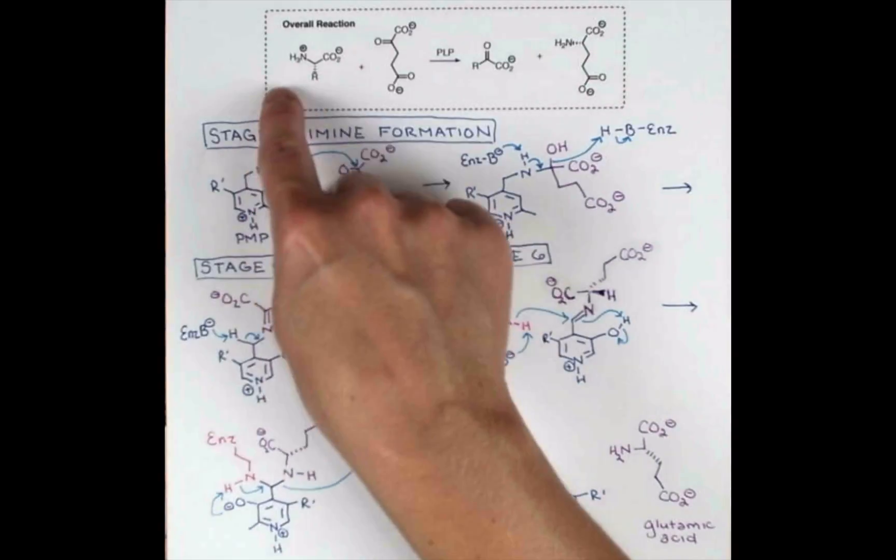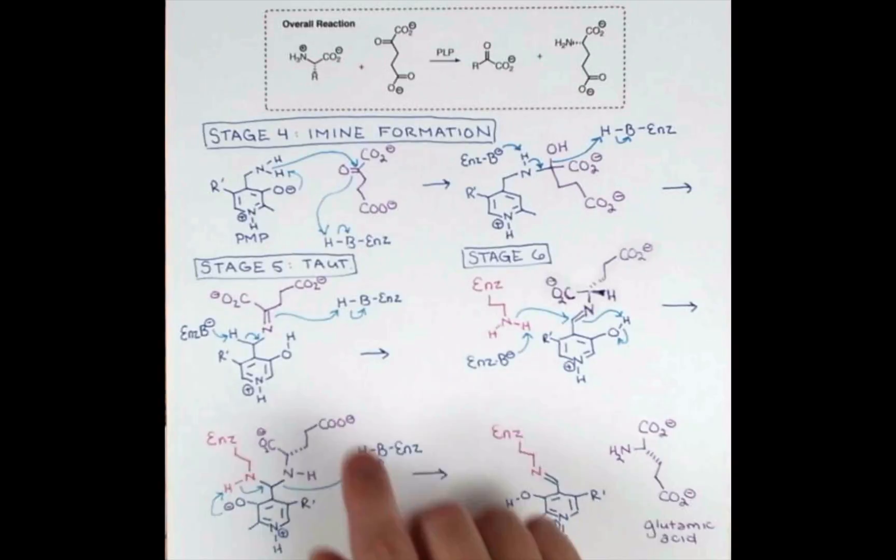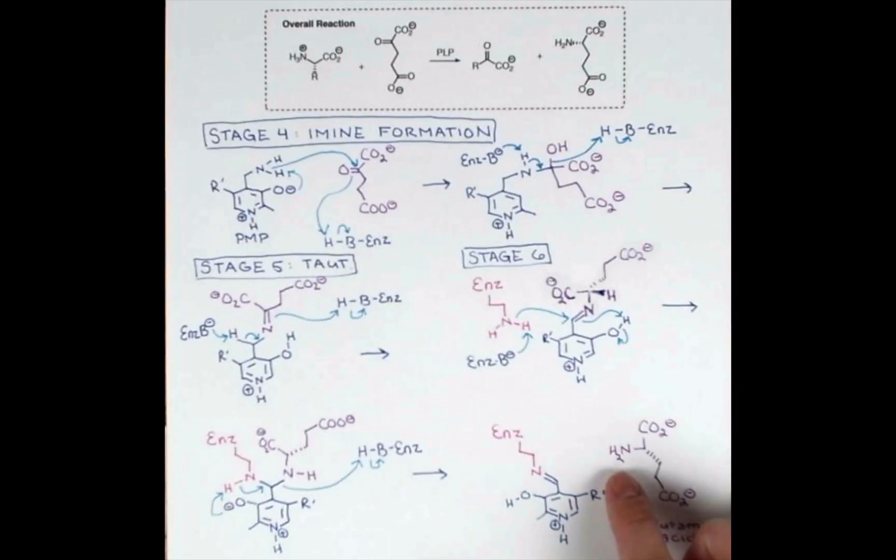So the enzyme is ready to complete another catalytic cycle, transaminating a new amino acid. We've also generated glutamic acid. And this can be deaminated so the amine can be removed. And this will produce ammonia. In some organisms, the ammonia can be directly excreted to the surroundings. However, in some higher organisms, such as humans, ammonia that's released from this will need to be converted to urea, a less toxic substance, and be excreted from the body that way.